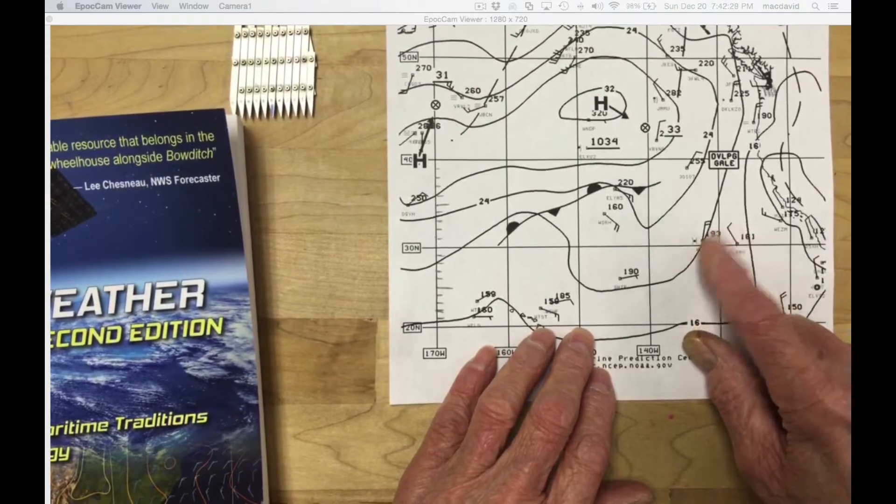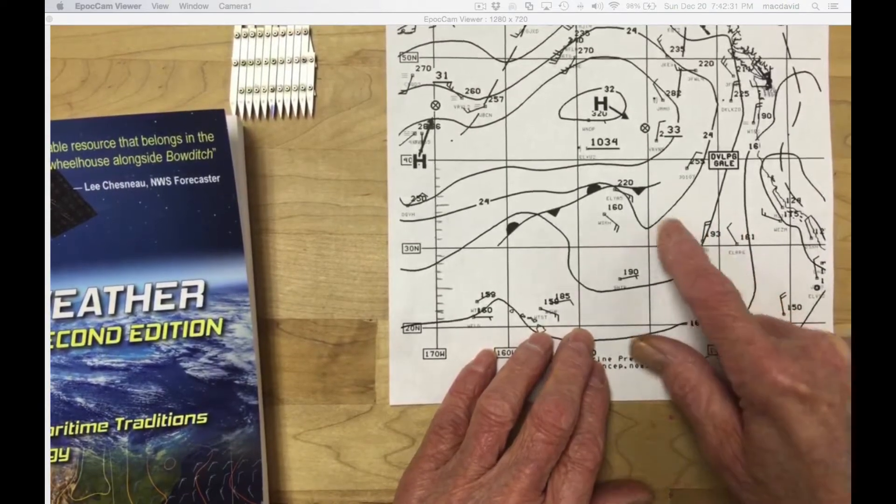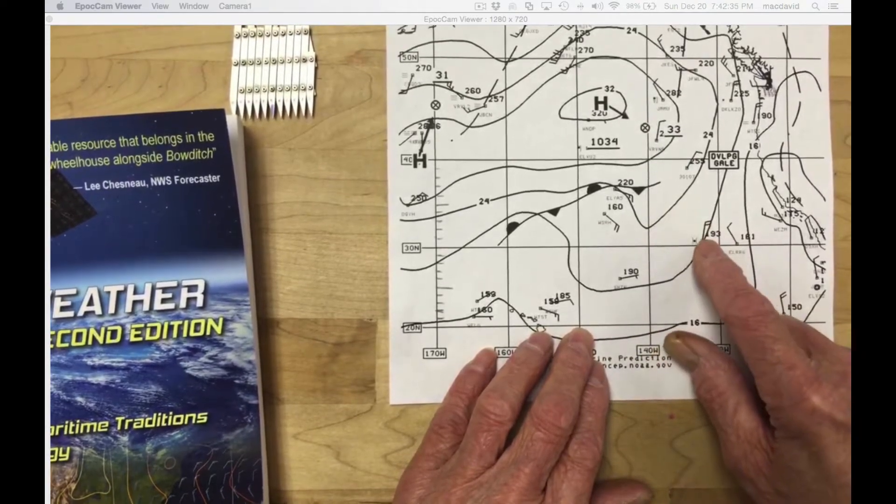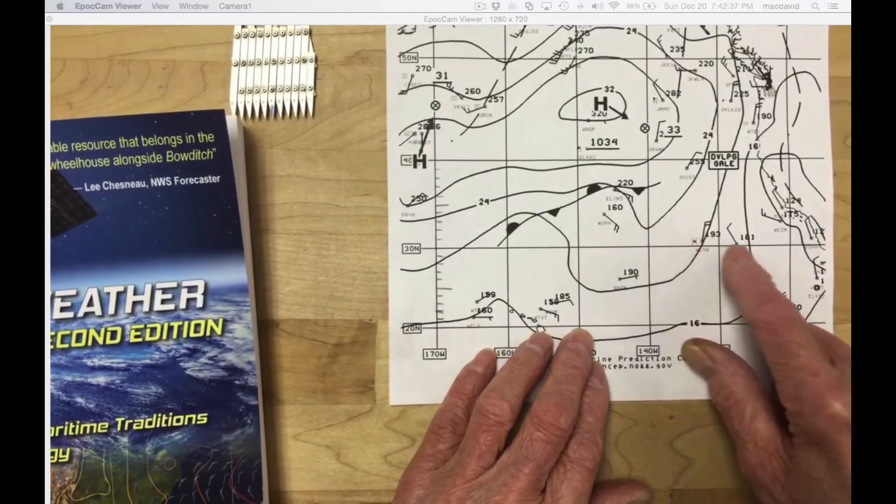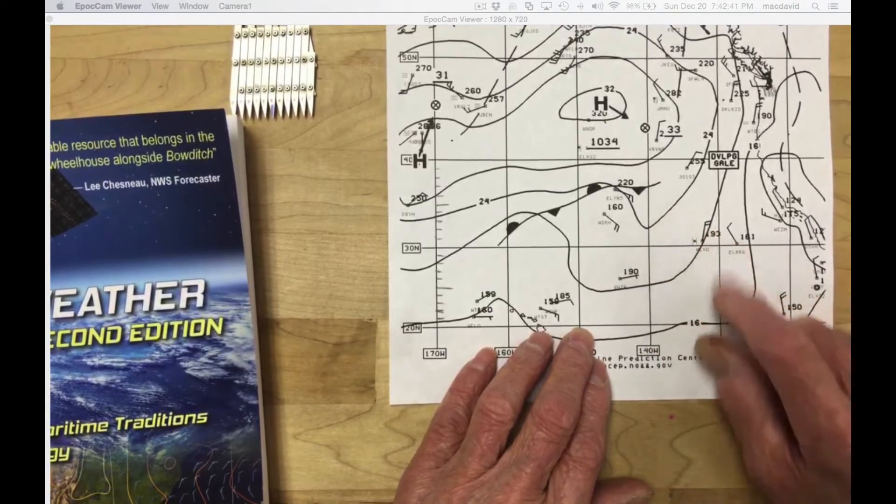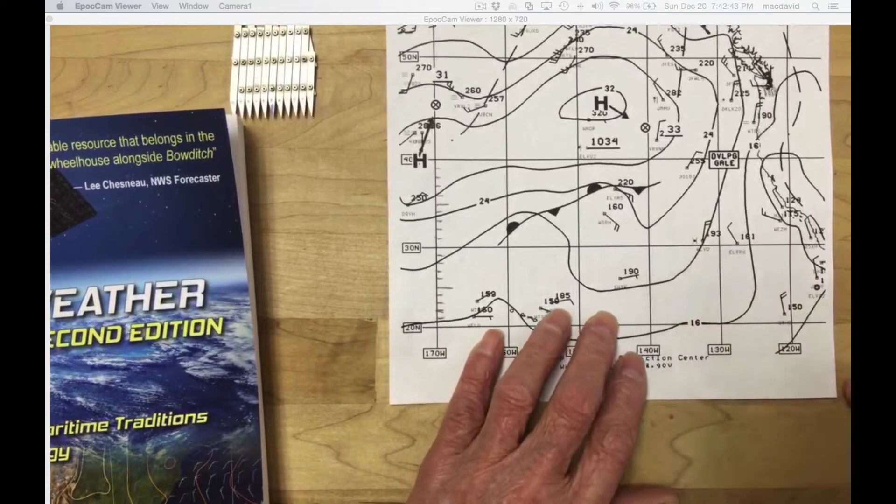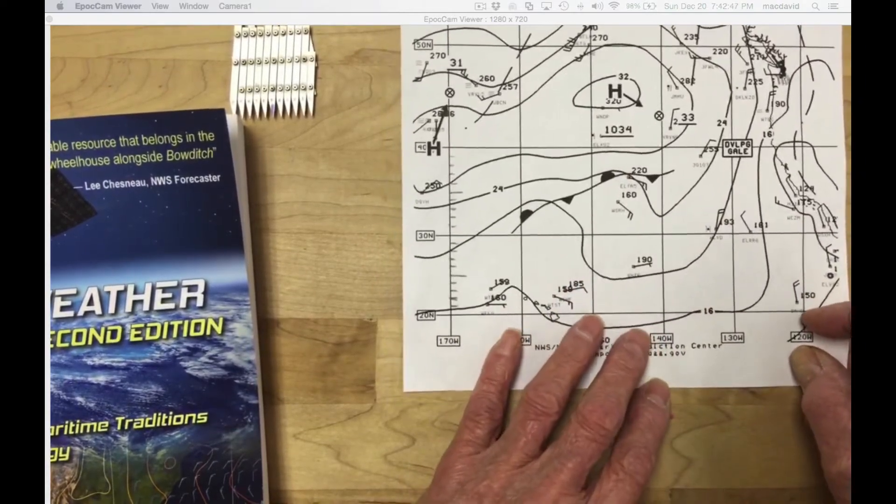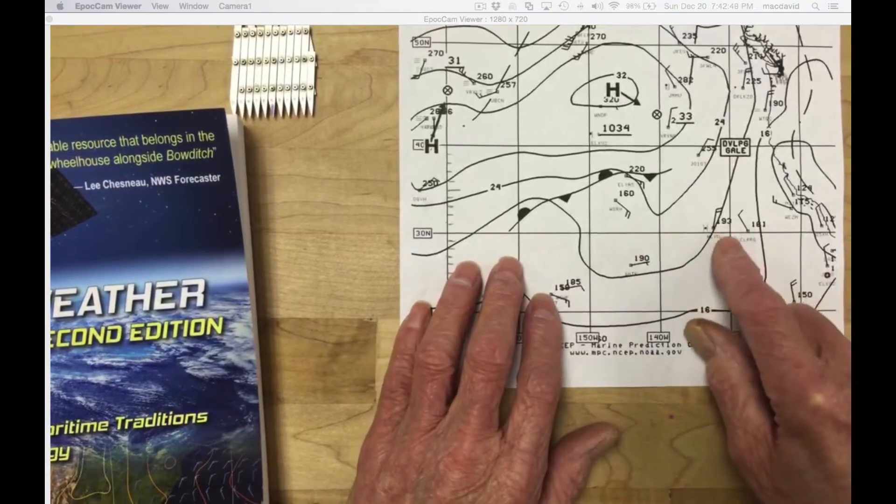The note at the end of the last video was that's probably, looking at the spacing of these isobars, a little stronger than consistent with this spacing, which means they may have had some convection or something at the time they made that report.